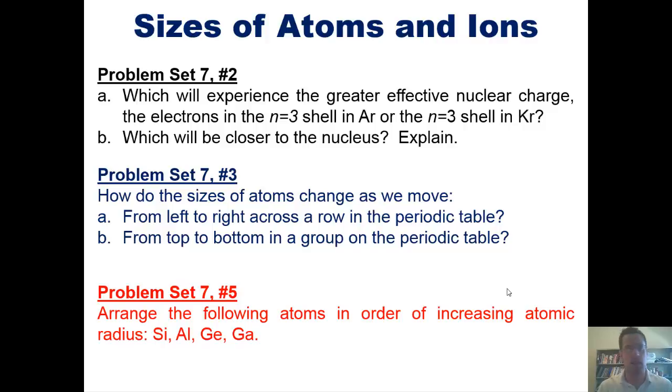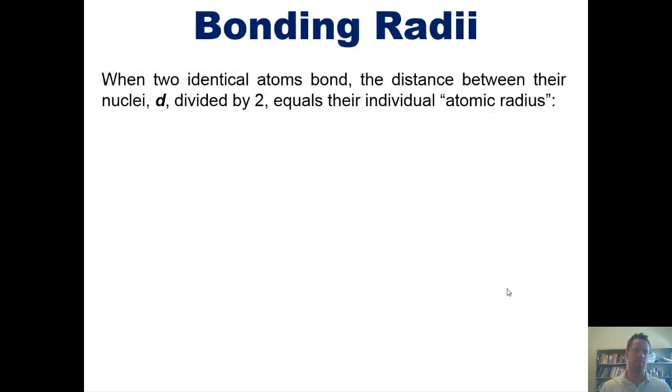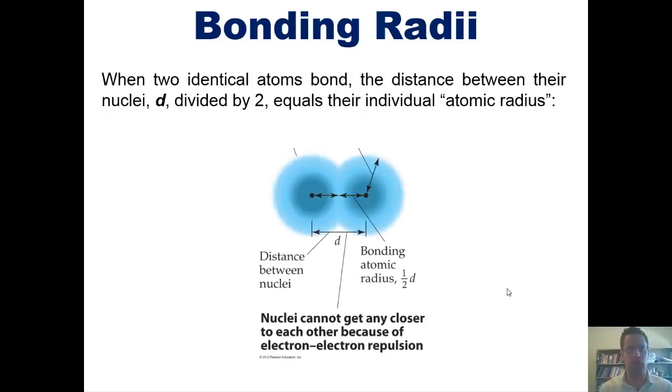That takes us to our next subject, that of bonding radii. When two identical atoms bond, as seen in this cute little picture, the distance between their individual nuclei, D, divided by 2, equals their individual atomic radius.